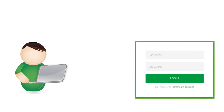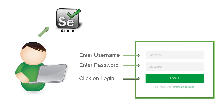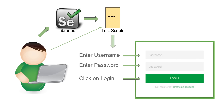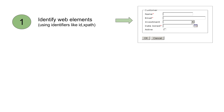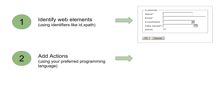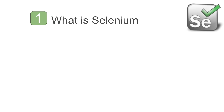Let us take a simple example: you want to test a login page. You will enter the username, enter the password, and click on the login button. To automate this testing, you download the Selenium libraries in your preferred programming language and use them to create your test script. The next time you want to test this login page, you call these test scripts and they do all the actions for you. At a high level, you will do three things: identify web elements like text boxes, dropdowns, and buttons; add actions in your preferred language along with test data; then run your test and validate.